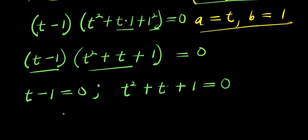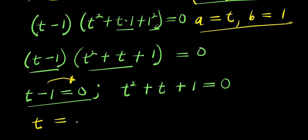Now, if t minus 1 equals 0, I can solve for t by moving this negative 1 over here. I will have t equals 1, so that is my t1 — my first solution.